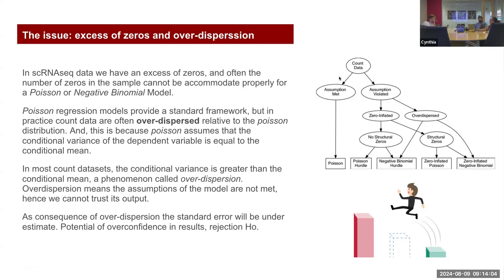In single-cell RNA-Seq data, we can have sparse count data. When analyzing only one dataset, the assumption can be met and we can model the data with a Poisson distribution. But when we have many datasets and the conditional variance is greater than the conditional mean, we have over-dispersed data. We then need a more suitable statistical model to identify genes with biological and statistical importance. As an analogy, overconfidence means thinking you can jump two columns when you actually cannot.